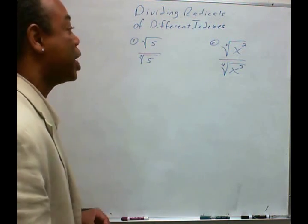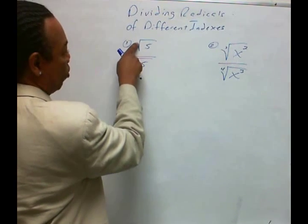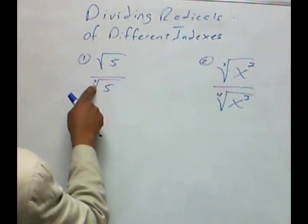Dividing radicals of different indexes. Okay, here we have a radical of a square, a square root, here's a cube root.